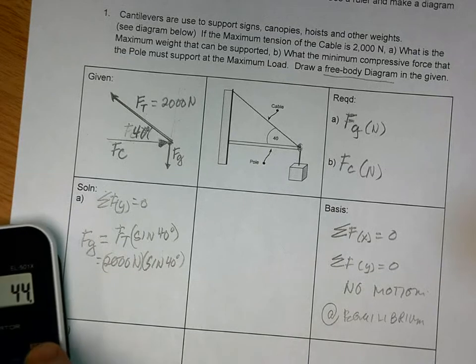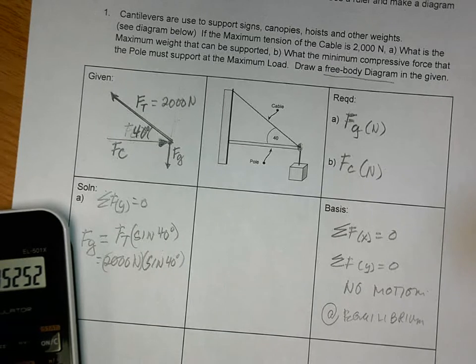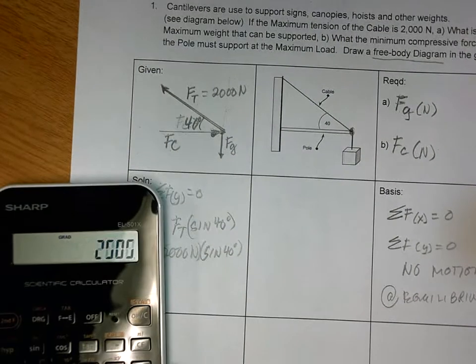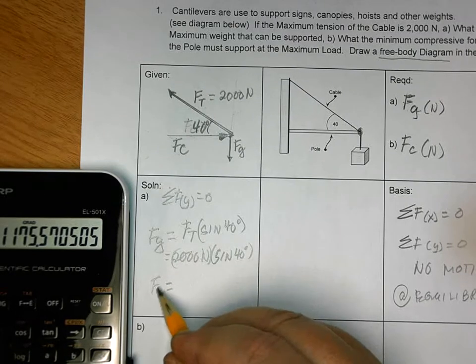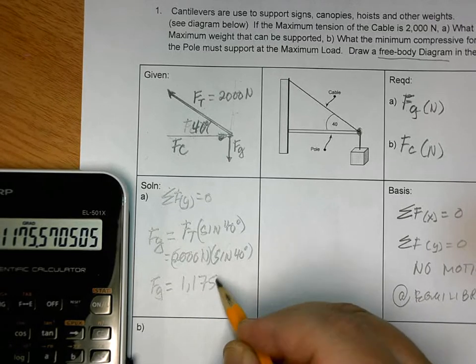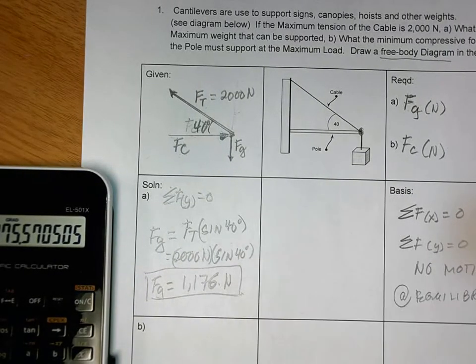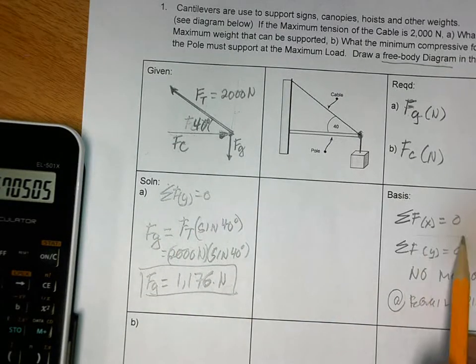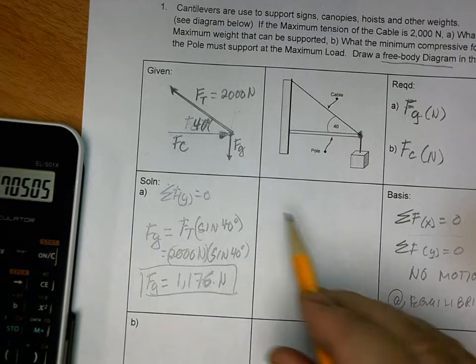Have a calculator, finally. So, how do we do this? Clear. 40 sine times 2,000. And the answer is FG is equal to 1,286 newtons. And one of the questions was, why did I put that line? Because I want you to realize that you have to solve the X, this one, separate from that. And a lot of you are confusing your forces, so it's better to do it that way.